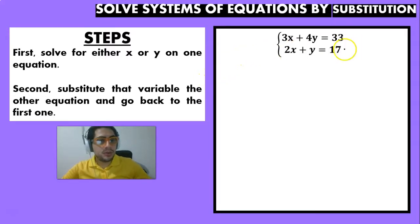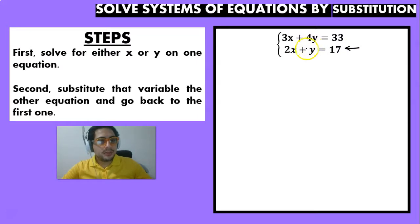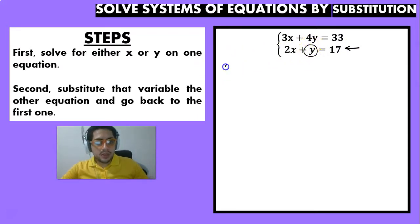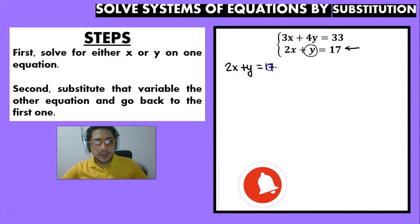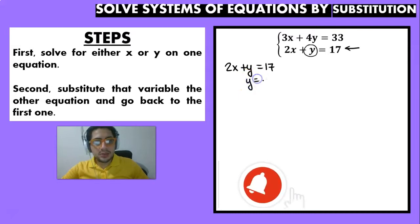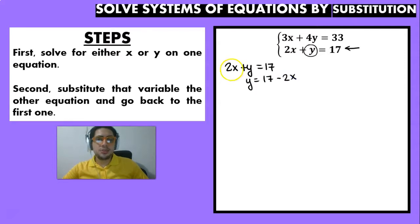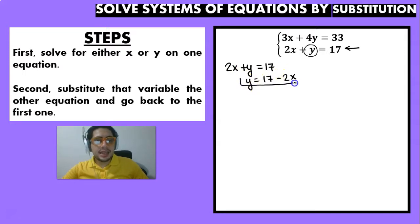I'm going to choose the second equation and I'm going to solve for y. So I have 2x plus y is equal to 17. That means that if I want to solve for y, y is equal to 17 minus 2x, because 2x was adding so I move it over subtracting.